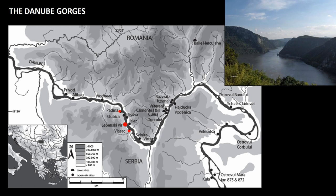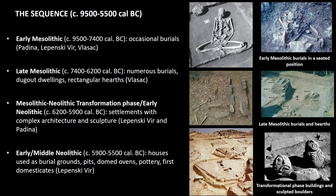Moving on to the context I will be talking about today: the Danube gorges refers to the section of the Danube between present-day Serbia and Romania in the Balkans. It is basically a series of deep and narrow gorges in the Danube Valley intersected by vast open basins, and here we can see that a number of early Holocene sites have been found in this region. Today I will be mostly speaking about Padina, here in the upper gorge.